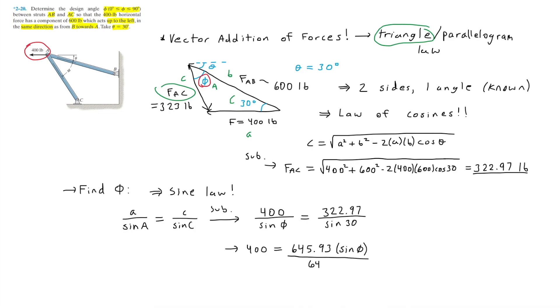That is equal to 645.93 times the sine phi. Dividing the 645.9 to the other side, this becomes 0.619 equals sine of phi. Now solving for phi by taking the sine inverse of 0.619, we get phi is equal to about 38.26 degrees.